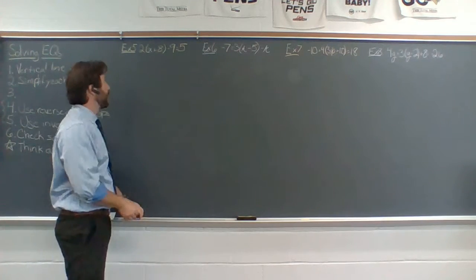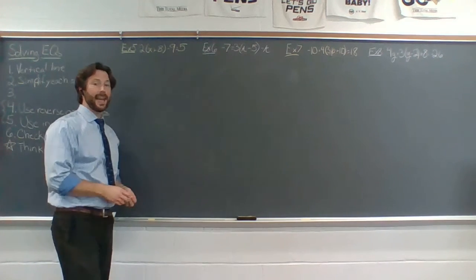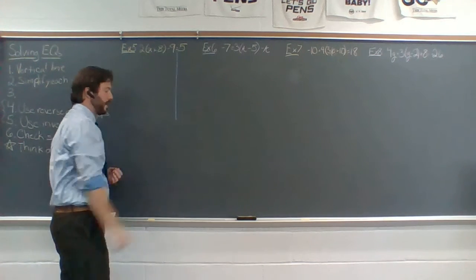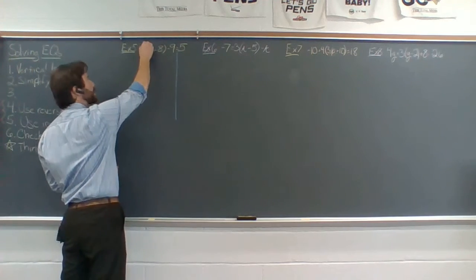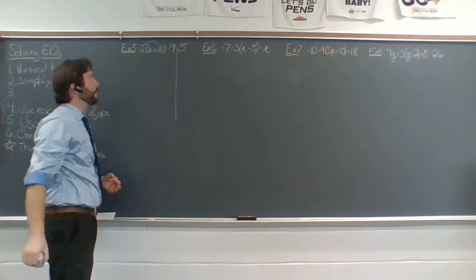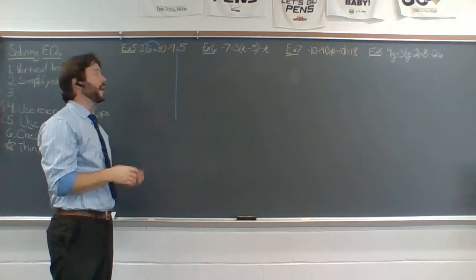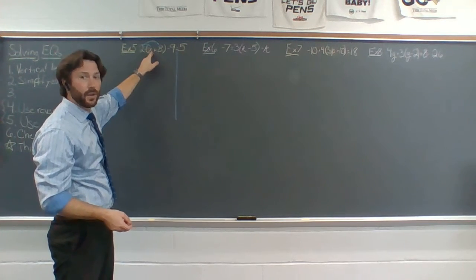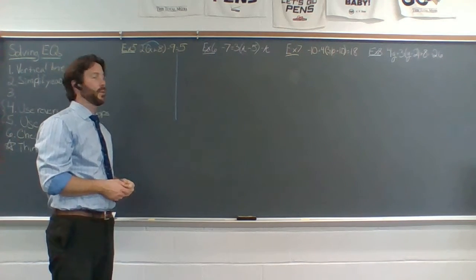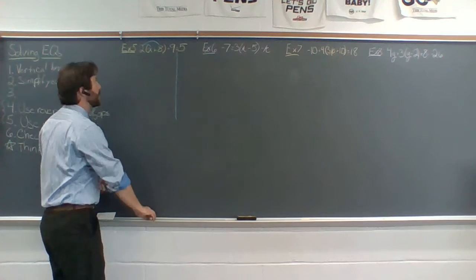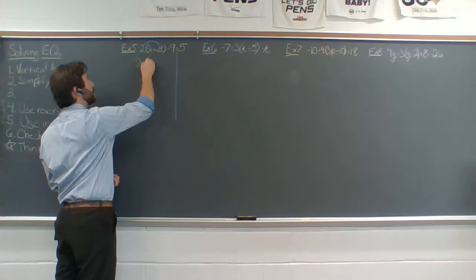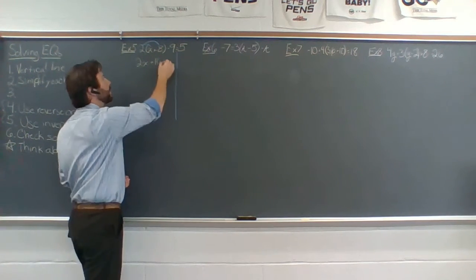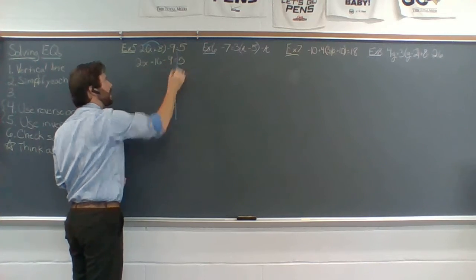Let's get to it. First off, I have 2 times the quantity x plus 8, minus 9, equals 5. The first thing I'm going to do is draw that vertical line down the middle. Then I'll start simplifying — I want to get rid of those parentheses. The only way I can get rid of these parentheses is to distribute. I can't add 8 to x since I don't know what x is, so I have to distribute. That gives me 2x, bring down the plus, 2 times 8 is 16, bring down the minus 9, equals 5.